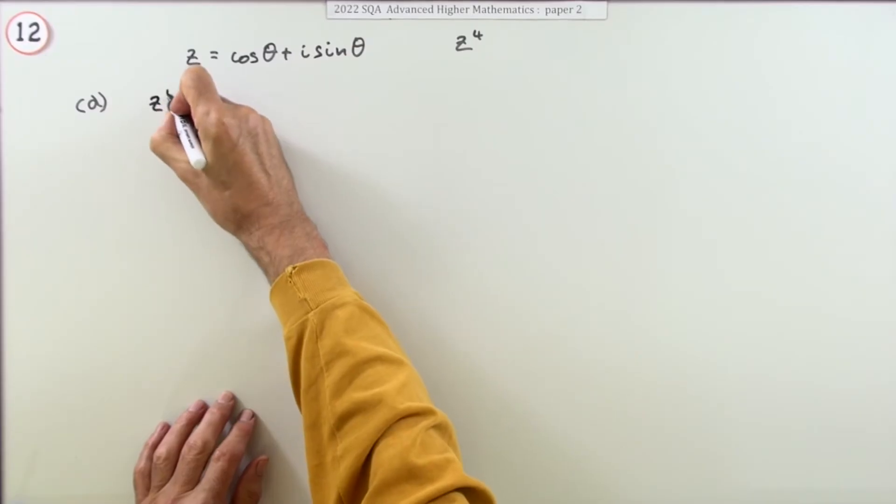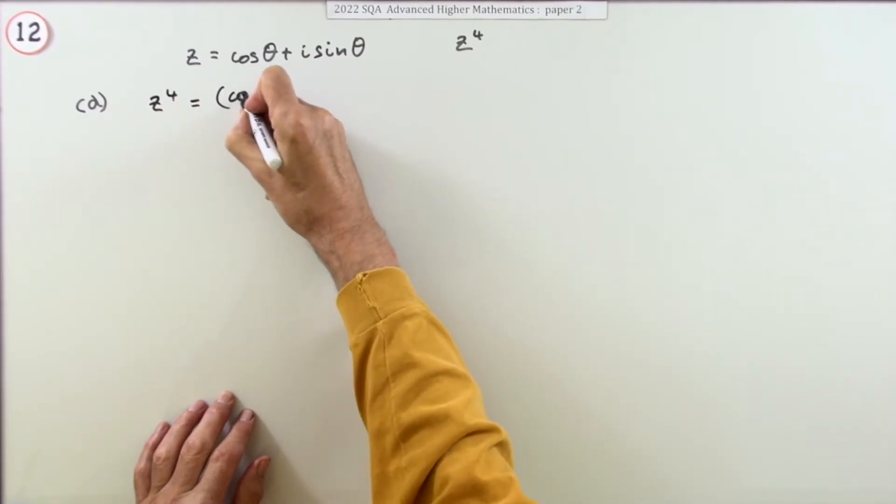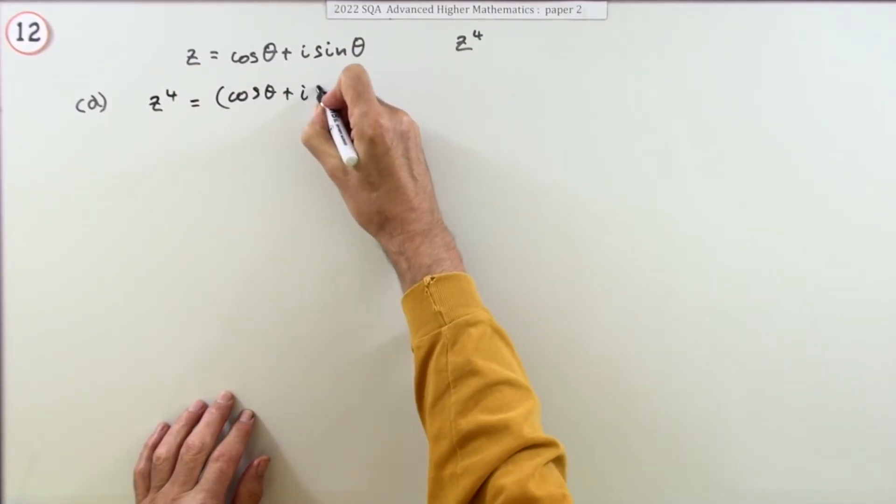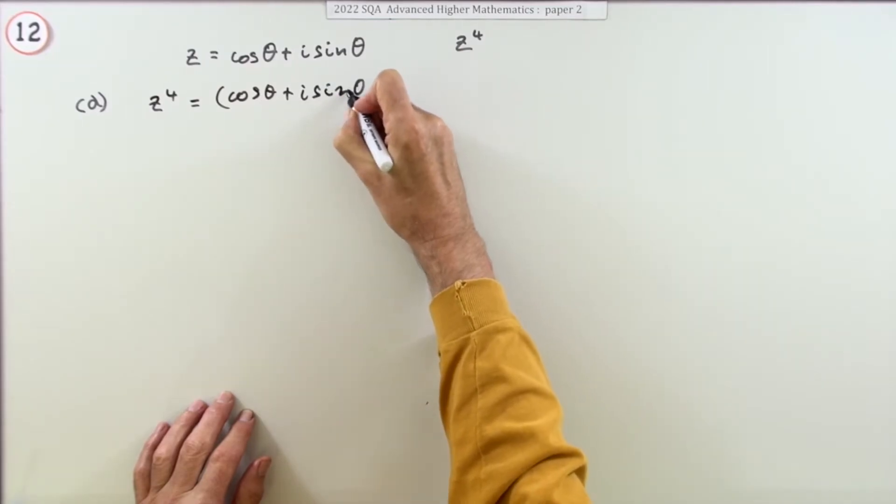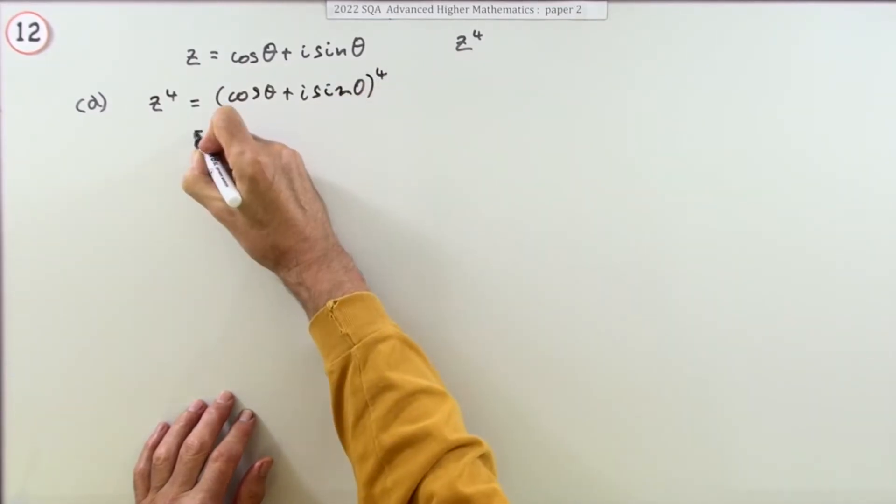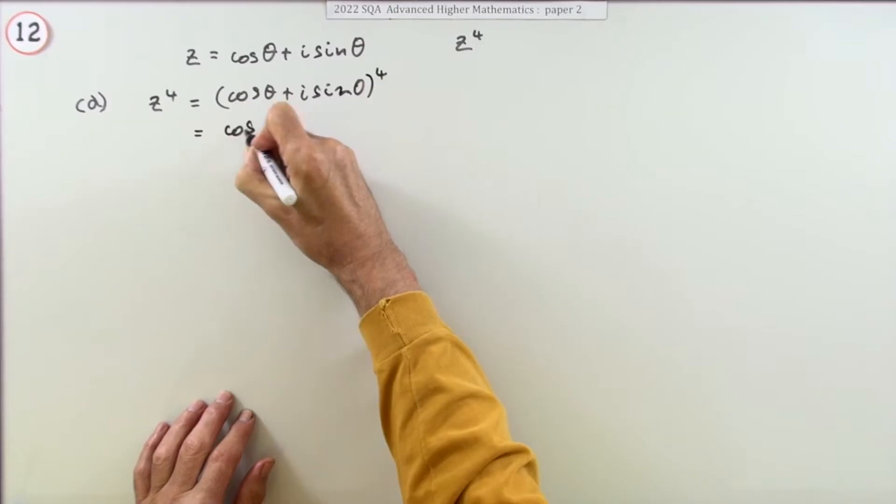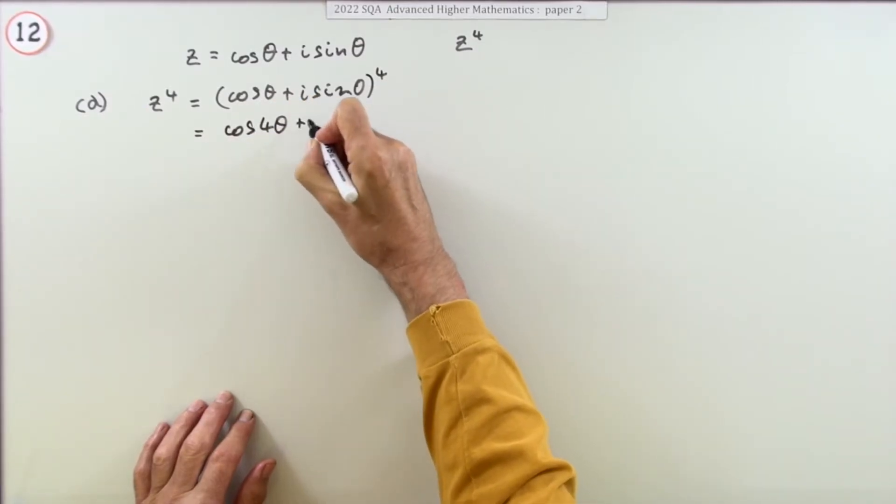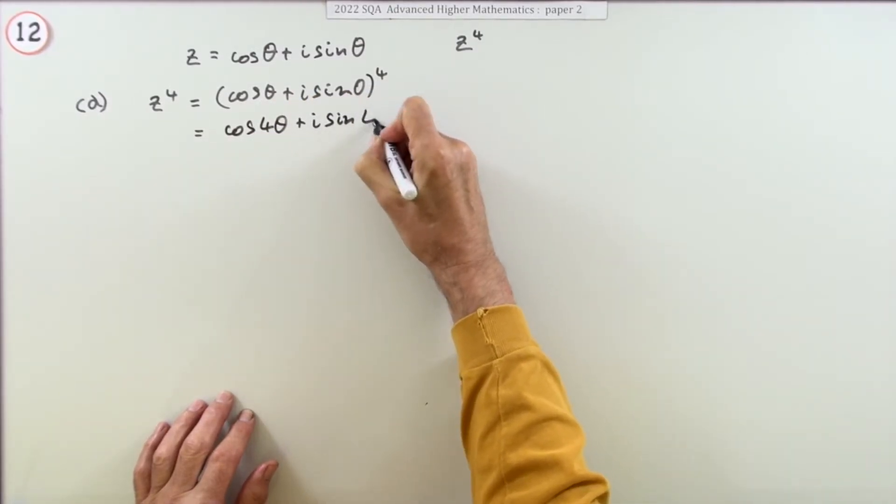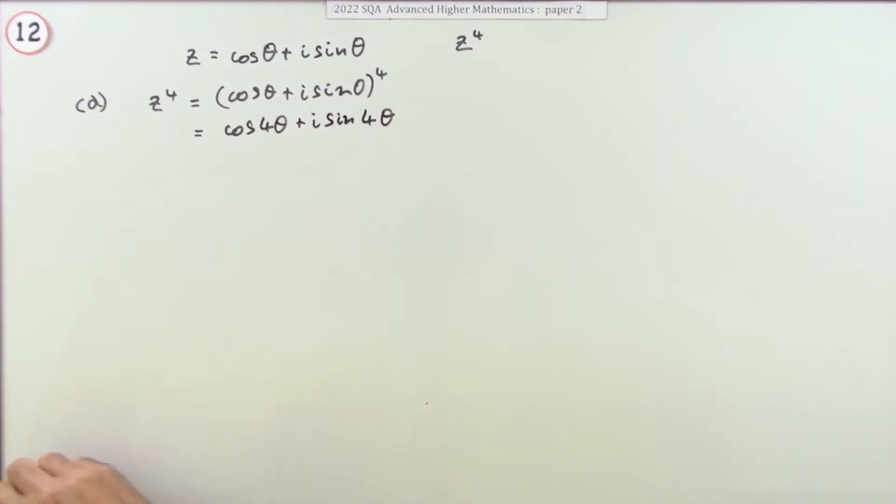Well that simply means that z to the 4 will be cos theta plus i sine theta to the power of 4. So that would just be cos 4 theta plus i sine 4 theta. That gets the mark.